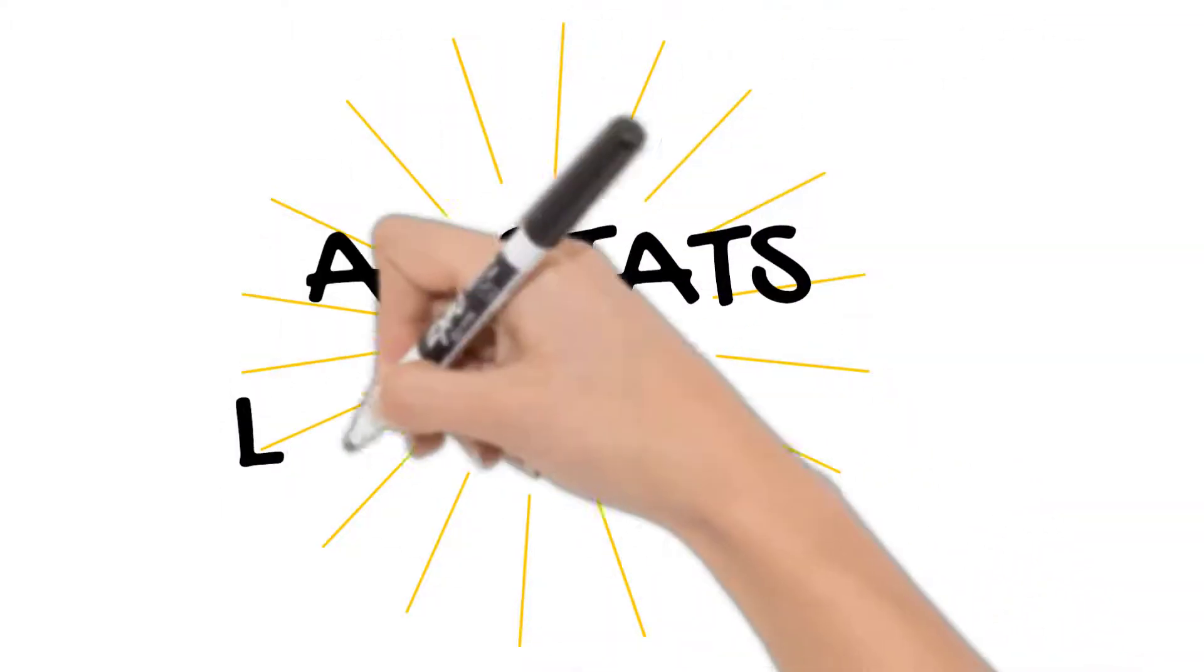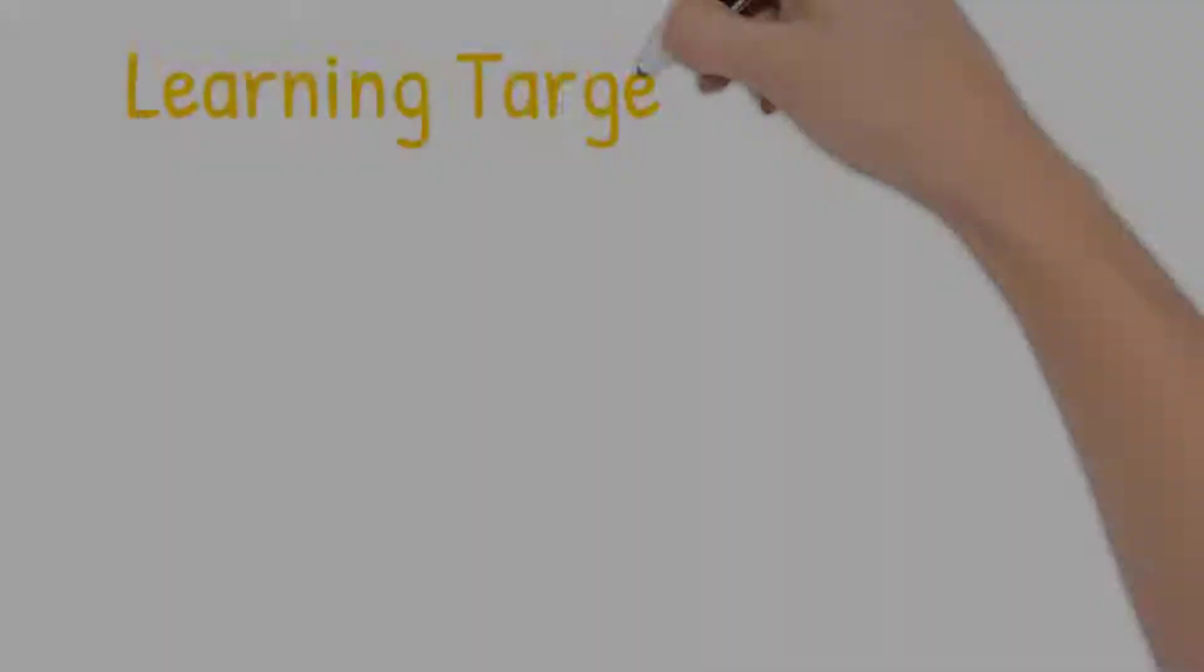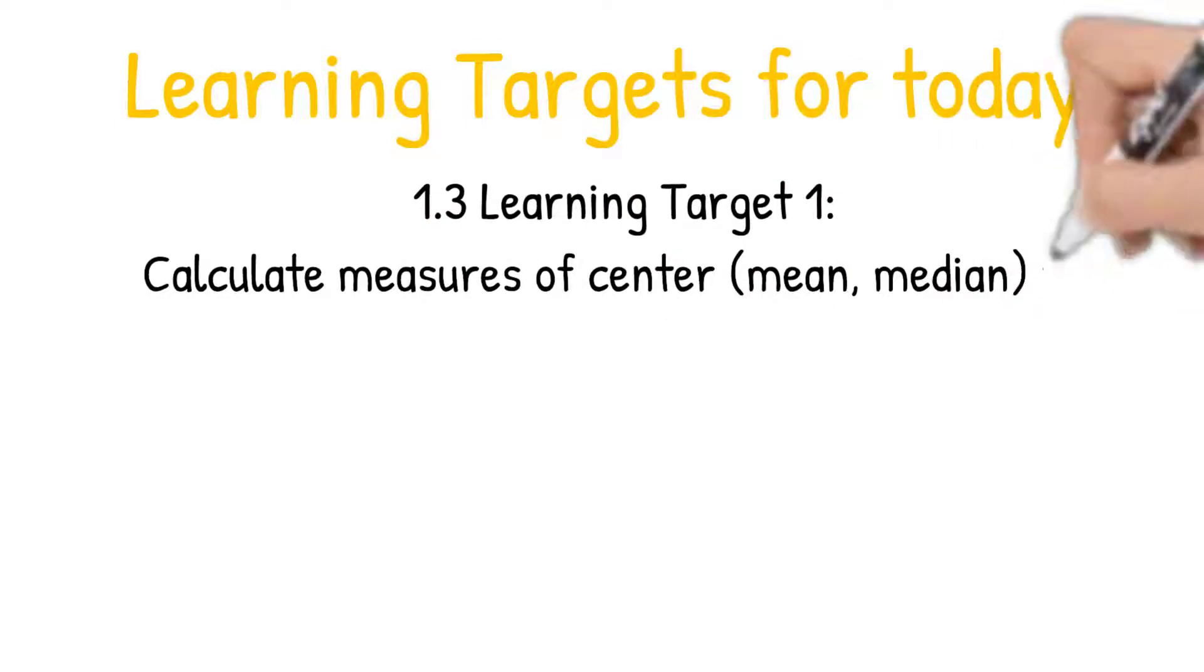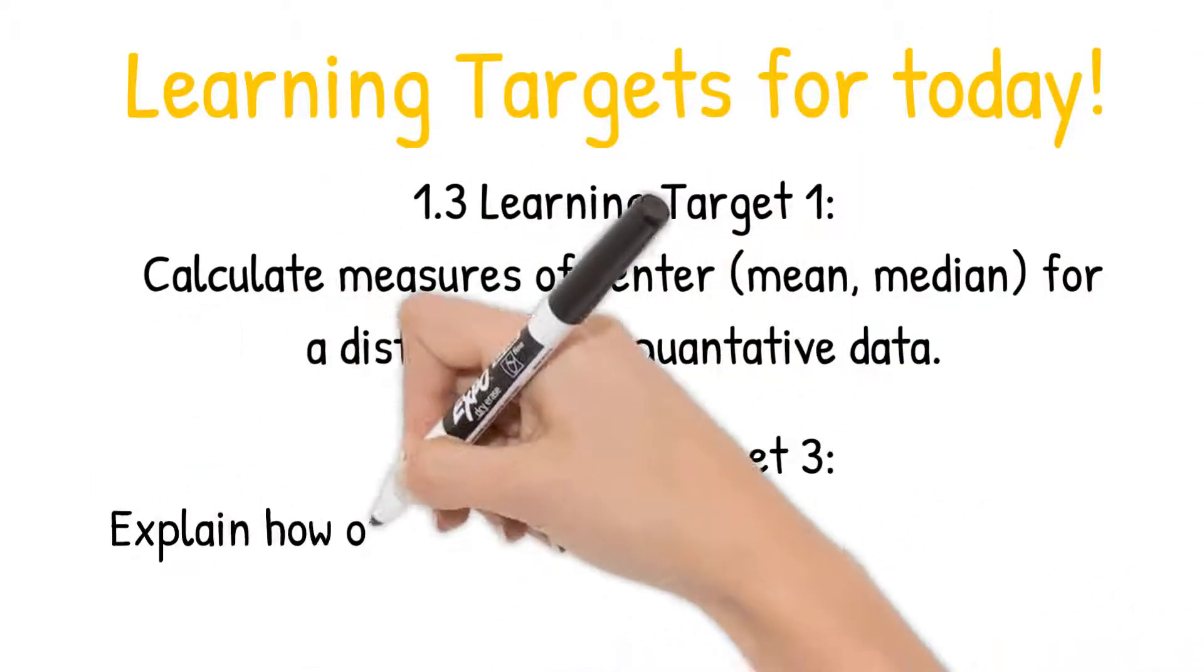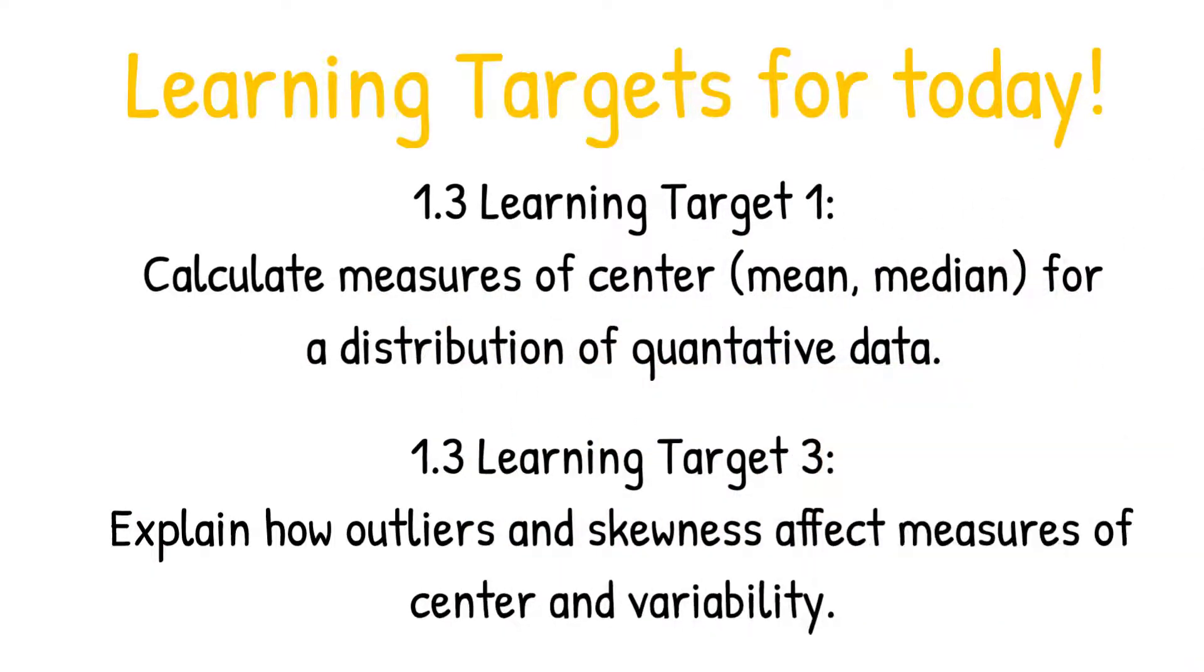Hi, this is Mrs. Marita. Welcome to AP Stats, lesson 1.3. Our learning targets for today are learning target 1, calculate measures of center, mean and median, for distribution of quantitative data, and also learning target 3, explain how outliers and skewness affect measures of center and variability.